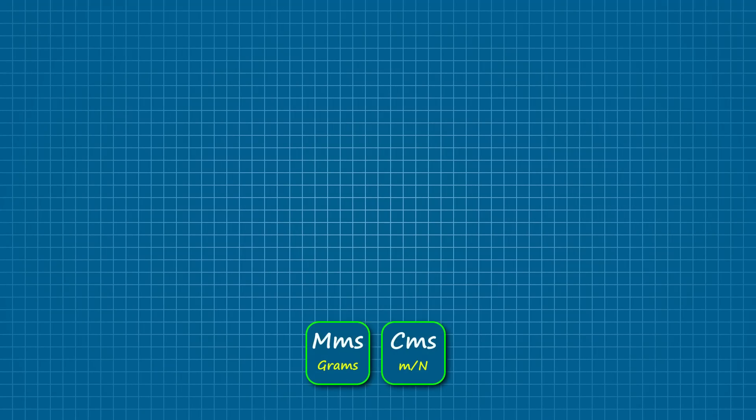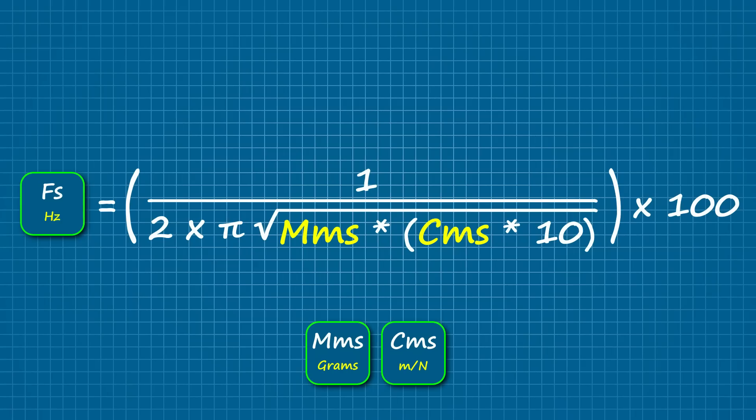The next parameter in the handful is the free air resonance. There's really no good reason for this one to be missing, but if it is, you can still solve for it as long as you know the moving mass and the suspension compliance. Here's the formula — again, you'll want to enter the compliance in meters per newton and the moving mass in grams.